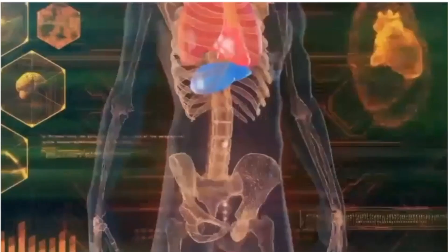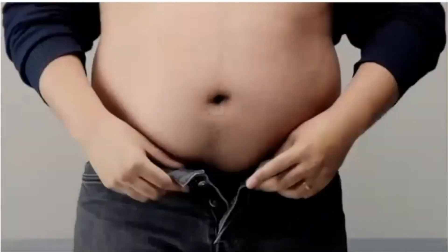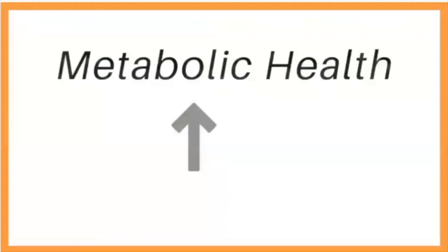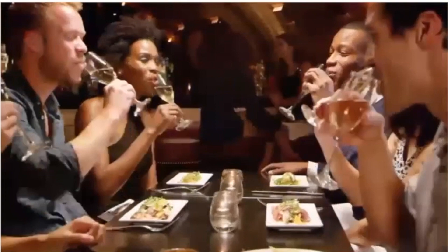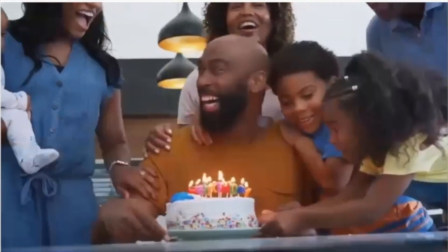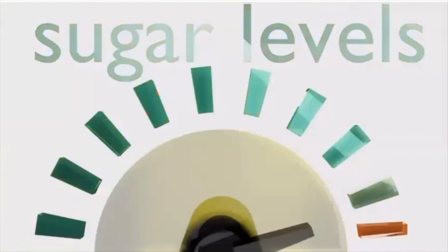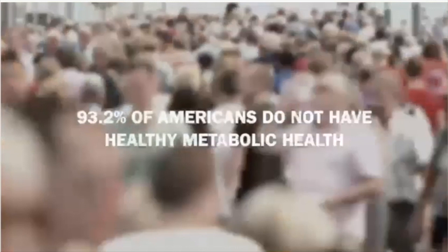Our metabolic health is responsible for many things inside our body. When our metabolic health isn't good, we start to experience things like extra weight especially around our belly, an increase in inflammation and joint issues, a decrease in energy, cholesterol issues, blood sugar issues, brain fog, sleep issues, aging skin, and we might even get more irritable. Our metabolic health is directly linked to our biological age — at a class reunion, for example, some people have aged more than others. According to a study from Harvard in 2018, 93.2% of Americans do not have healthy metabolic health. We are in the throes of a health crisis.